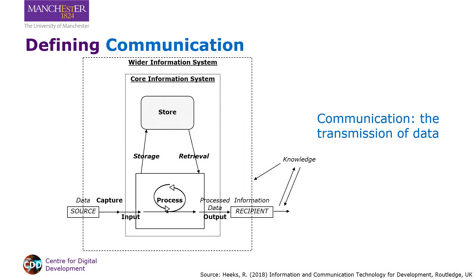Here's a more detailed model of that pyramid, showing how data gets processed into information and then assimilated into knowledge. You'll see a lot of arrows, and each of those arrows represents a movement of data. This is communication, and we can therefore define communication as the transmission of data.